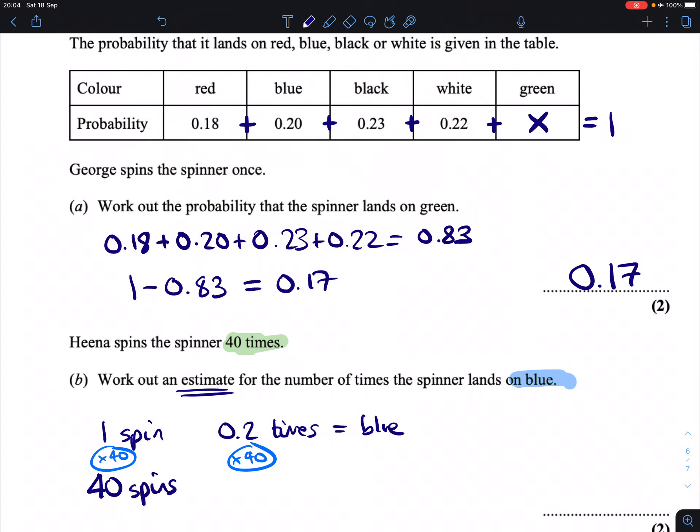So what we would type in our calculator is 0.2 times 40, which is then going to give us 8. So 8 times is our answer.